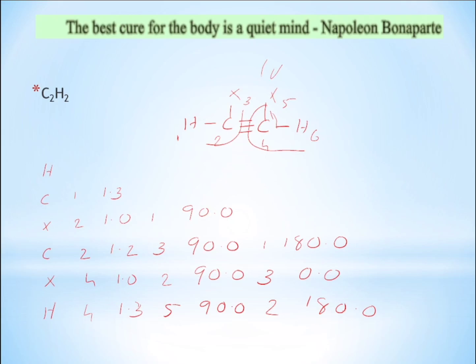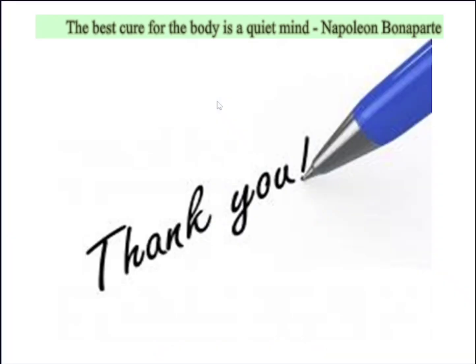This is the acetylene molecule Z-matrix. The important point here is to place two dummy atoms — one on the first carbon and one on the second carbon. Thank you.